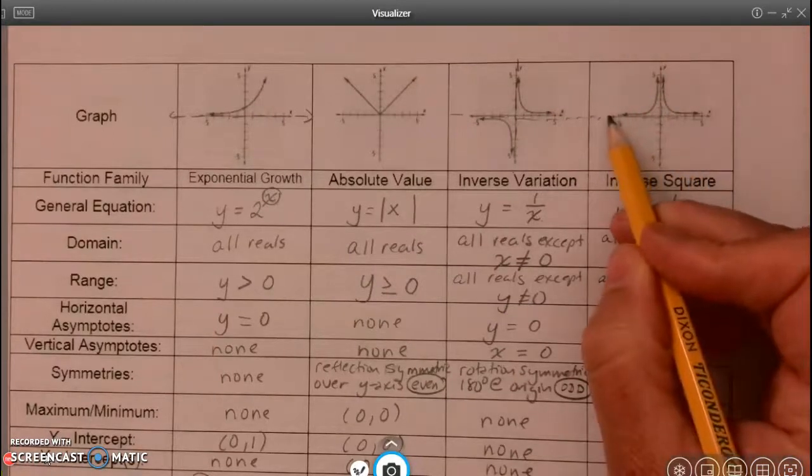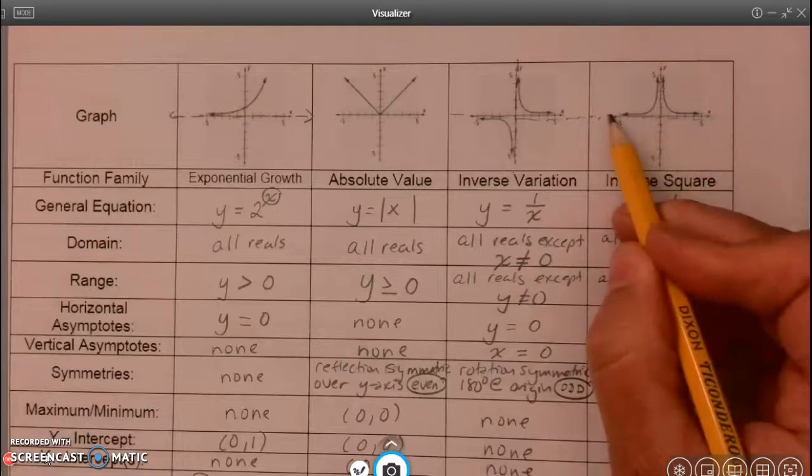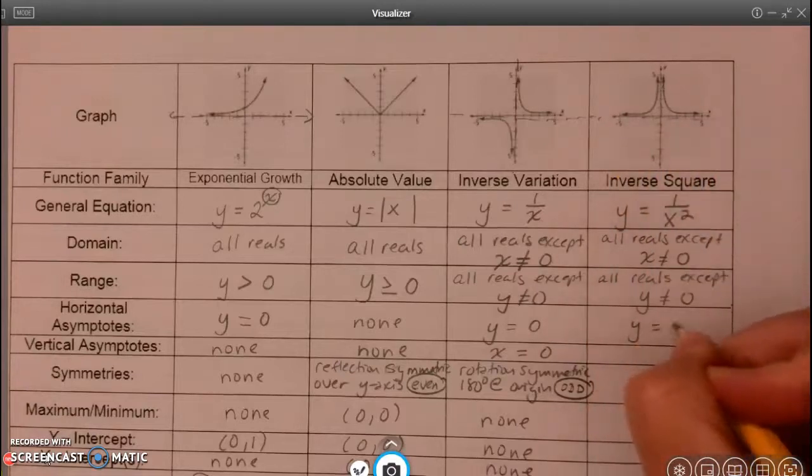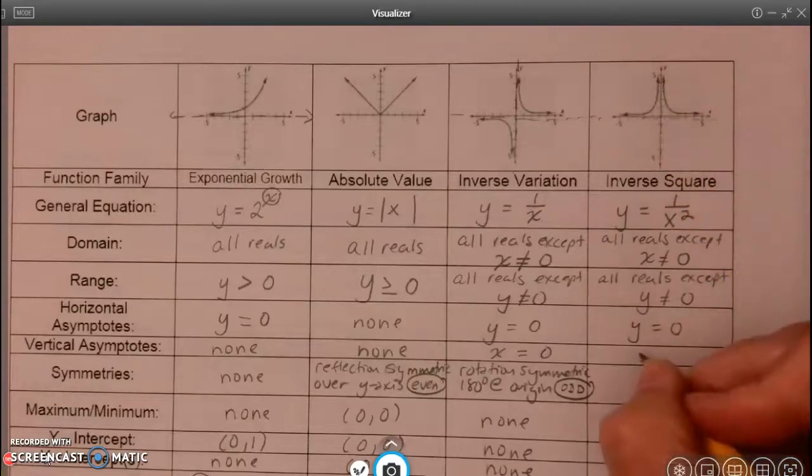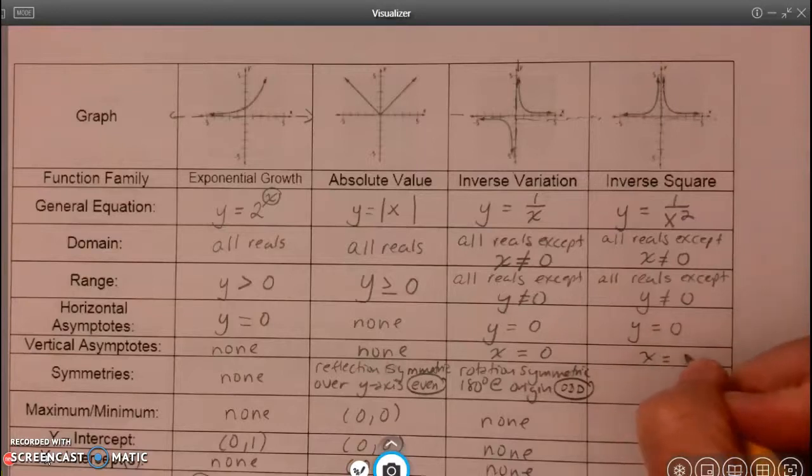So the x-axis, once again, is the horizontal line y equals zero, and the y-axis is the vertical line x equals zero.